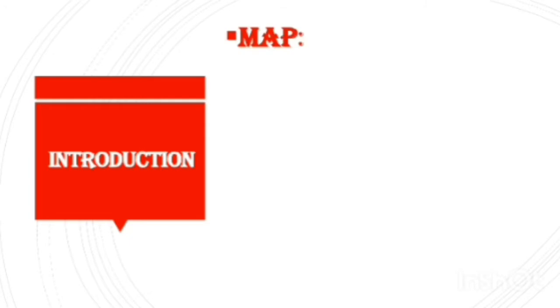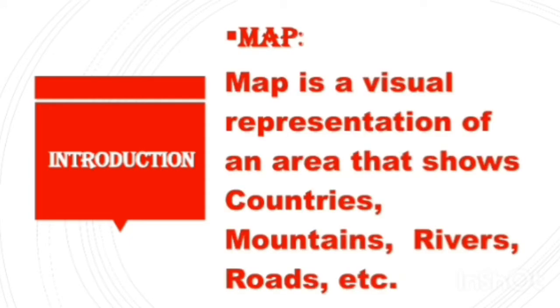What is a map? A map is a visual representation of an area that shows countries, mountains, rivers, roads, etc.